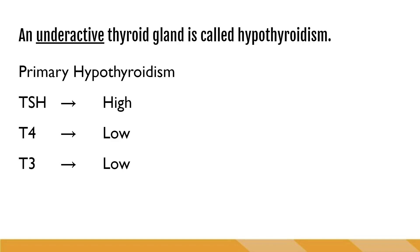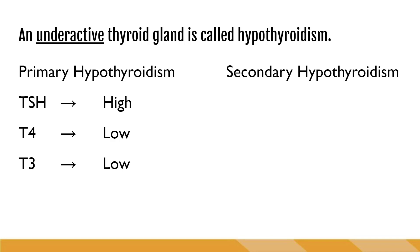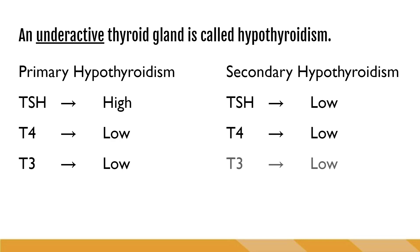The other type of hypothyroidism is secondary hypothyroidism, and this is a result of a non-functioning pituitary gland. The pituitary gland does not respond to the hypothalamus' TRH, therefore it does not produce TSH, so TSH is low. When there is no TSH, the thyroid won't get the message to make T3 and T4, causing those levels to also be low.